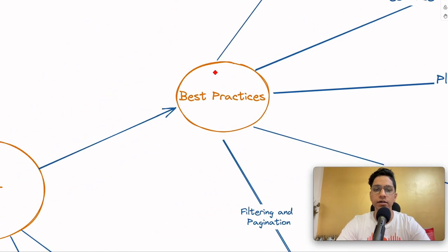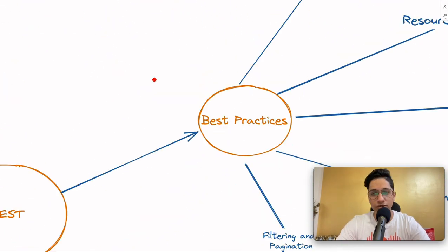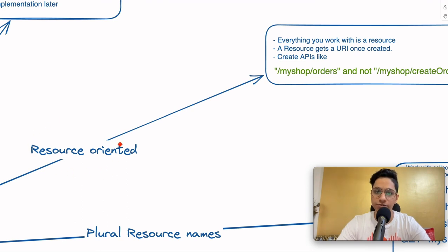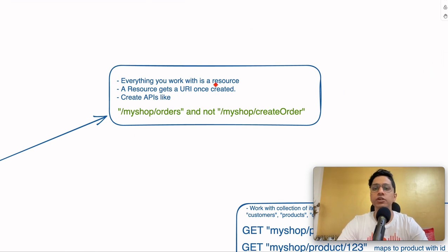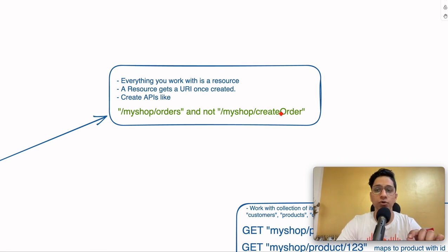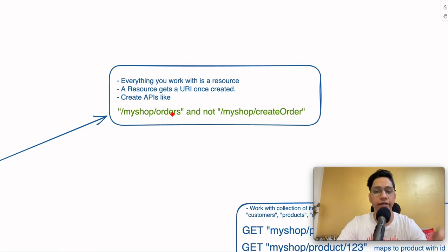Second is resource orientation. Unlike RPC, in REST you are resource-oriented, which means you don't think about operations or actions you're performing, but rather about resources. Everything you work with in REST is a resource. A resource gets a URI once created — like an order in e-commerce. The better practice is to not create APIs like createOrder, updateOrder, deleteOrder, or getOrder. Instead, specify the resource you want to deal with, which is 'orders'. The idea is to think about resources, not operations.